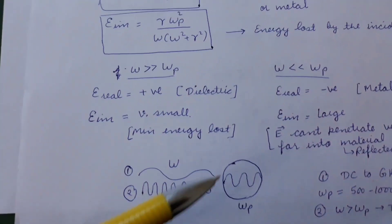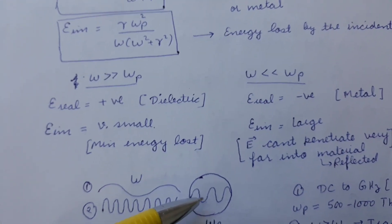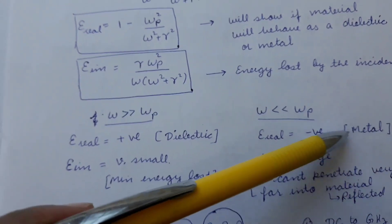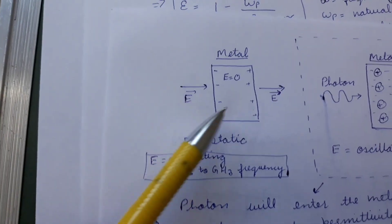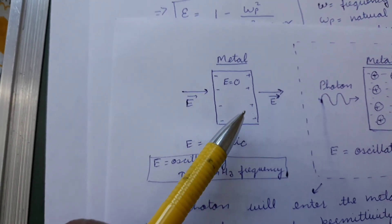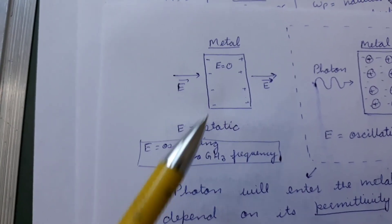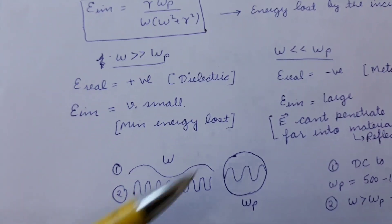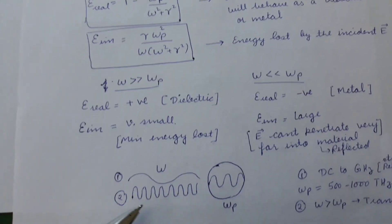If the frequency is very small compared to the plasma frequency, the photon will be reflected and cannot enter the material. A negative real part means the material behaves like a metal, so the photon is reflected — as discussed earlier in this lecture. With very low frequency, losses are also very large, meaning the electric field cannot penetrate far into the material and is reflected.